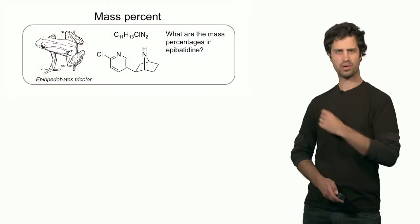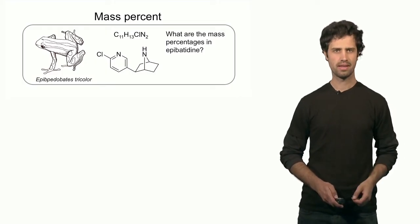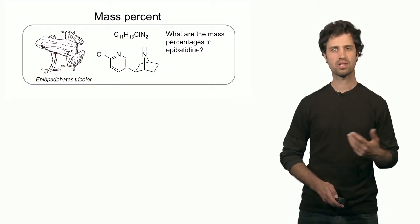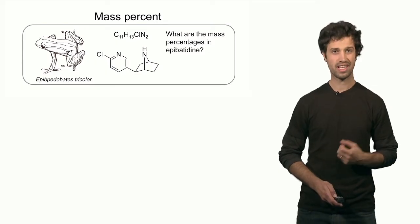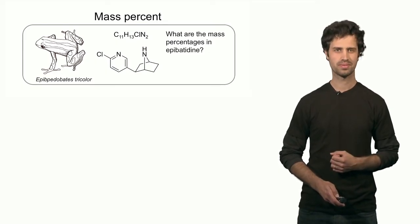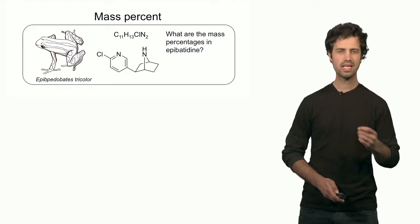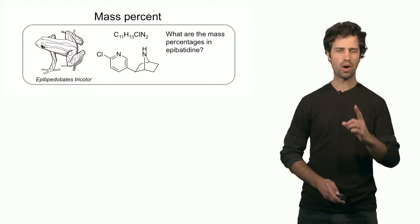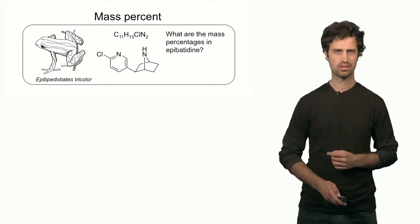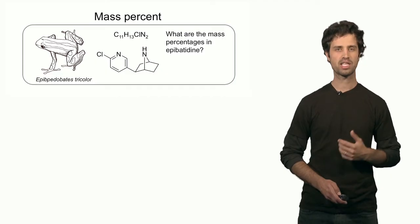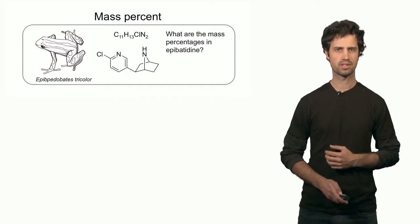Let's look at another example: epibatidine. Epibatidine is a molecule found on the skin of some South American frogs and is a poisonous substance. The molecular formula of epibatidine is C₁₁H₁₃ClN₂ — 11 carbons, 13 hydrogens, 1 chlorine, and 2 nitrogens. Based on this molecular formula we can determine the mass percentages of each element.